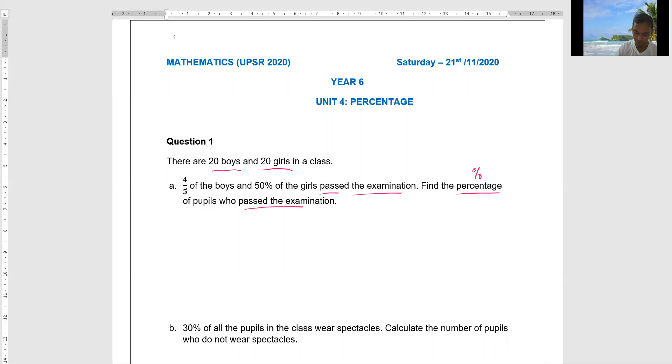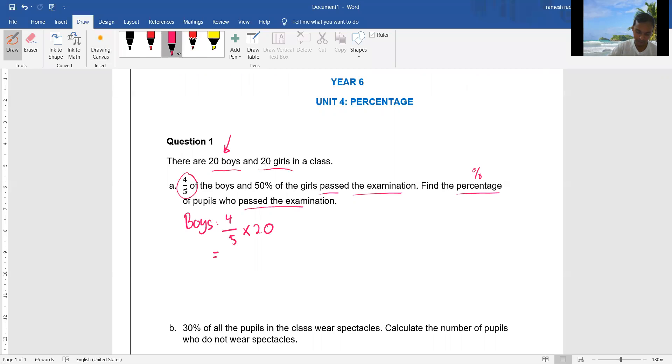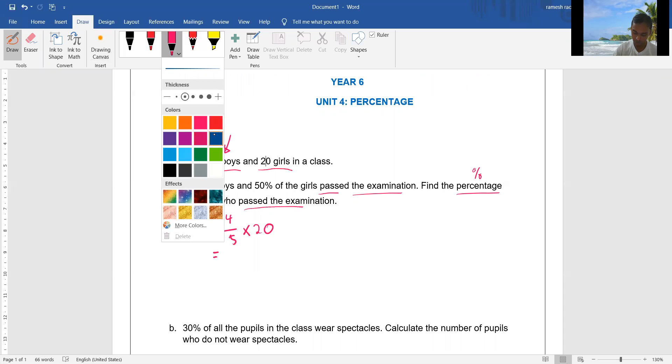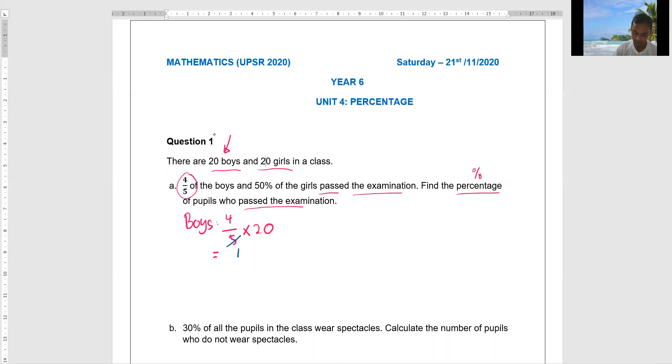Let's say we find the boys first. So write it here: boys equal to 4 over 5 times 20 boys. So it's equal to how much you're going to get? You'll get 16. You should know how to solve this: 5 divided by 5 gets 1, so 20 divided by 5 gets 4. You'll get 16 boys.